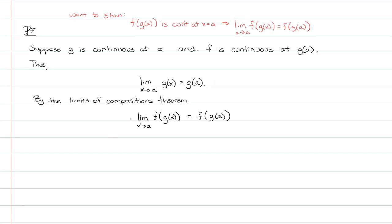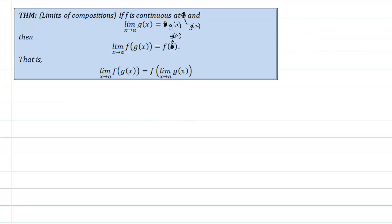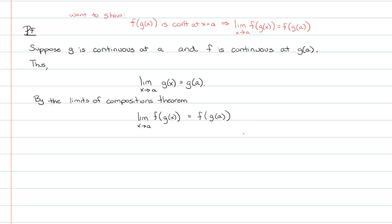By the limits of compositions theorem, the limit as x approaches a of f of g of x is equal to f of g of a. Again, because going back to that theorem, as long as we know f is continuous at g of a, which was part of our assumption in this theorem, and that g itself is continuous at a, which is part of this theorem, then the limit as x approaches a of the composition is equal to f of g of a. We're pretty good on that. But it seems a little circular. But such is the feeling or essence of some proofs. They do feel that way when you're first starting out in proofs.